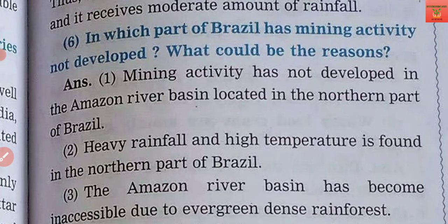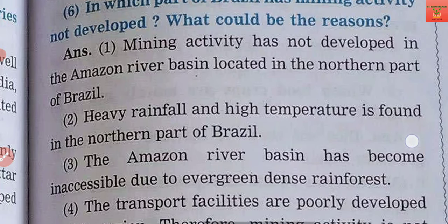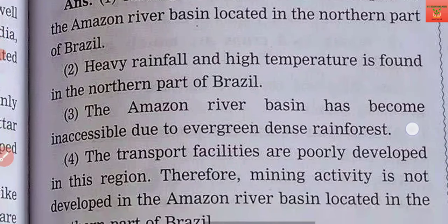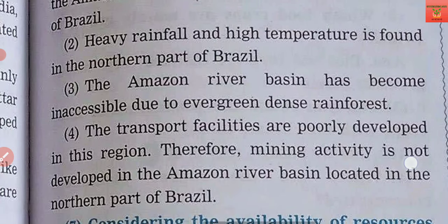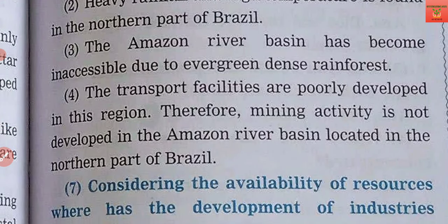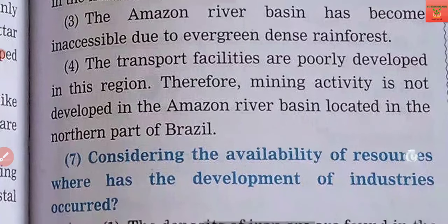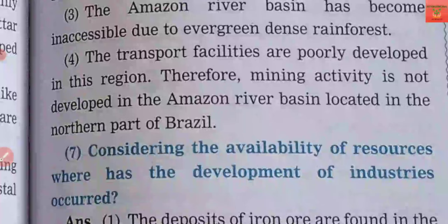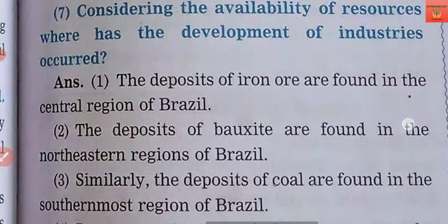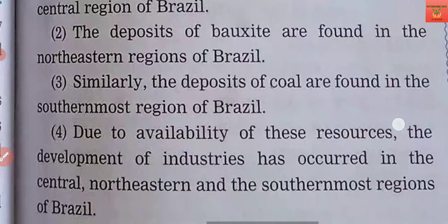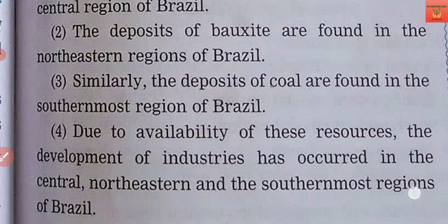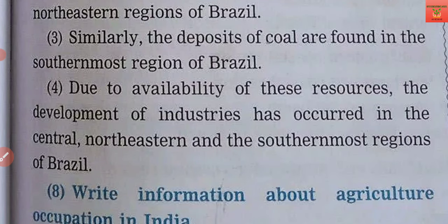In which part of Brazil has mining activity not developed, and what are the reasons? In the northern part, mining activity has not developed because there is heavy rainfall and high temperature in the northern part, which is the Amazon River Basin region. Dense forests make the area inaccessible, and transportation facilities are very poor, making it impossible to utilize the resources. Where has industrial development occurred? Iron ore is found in Brazil's central region, bauxite in the northeast region, and coal deposits in the south region. Due to availability of these resources, industries have developed in the central, northeastern, and southern parts of Brazil.